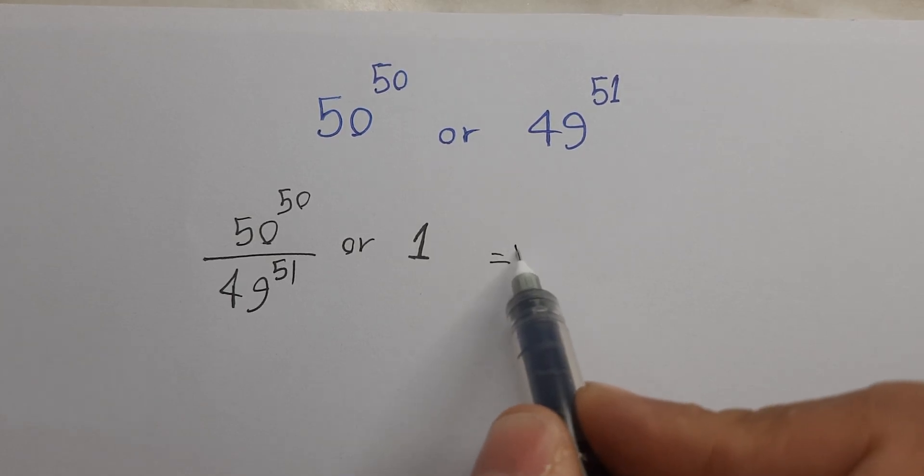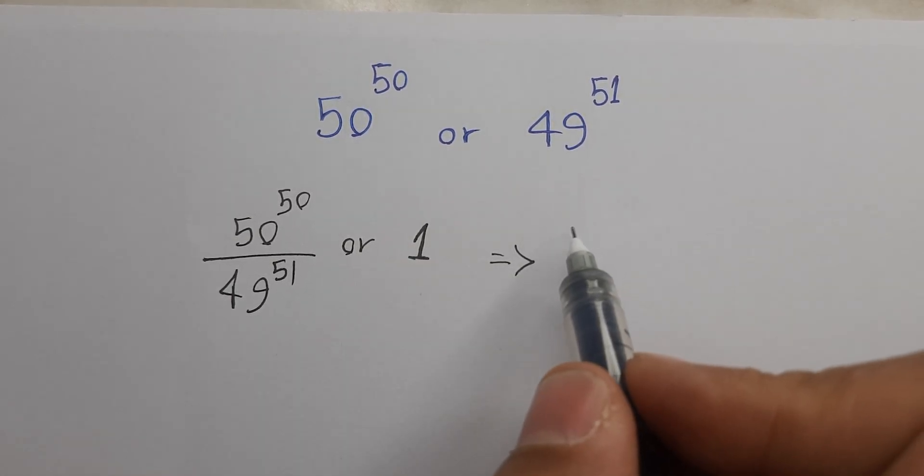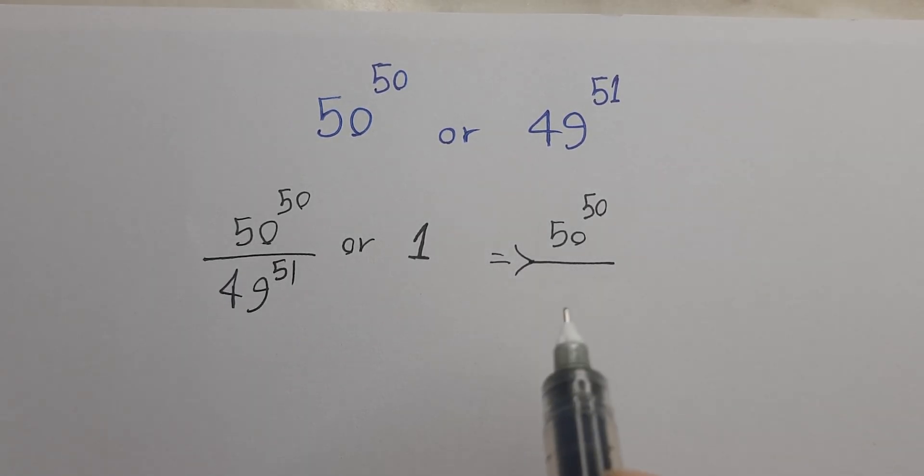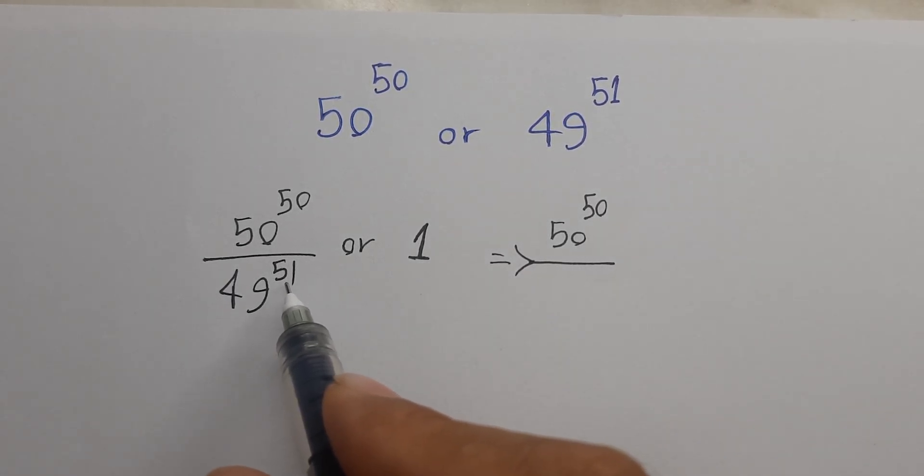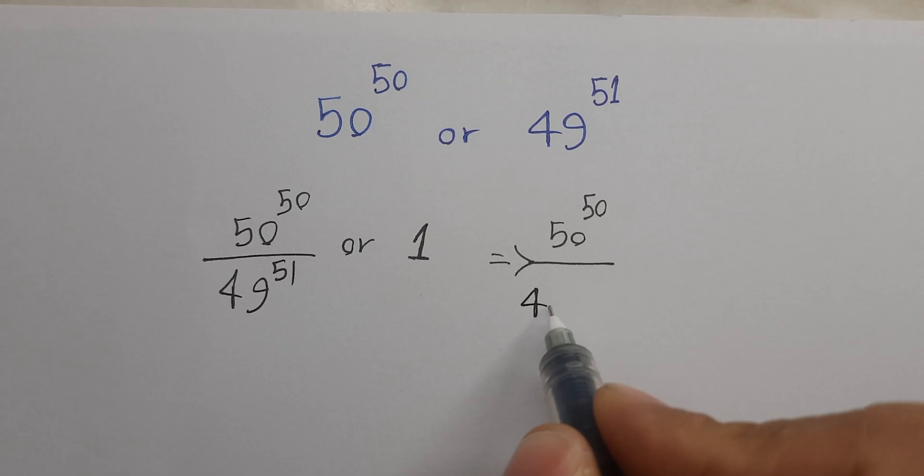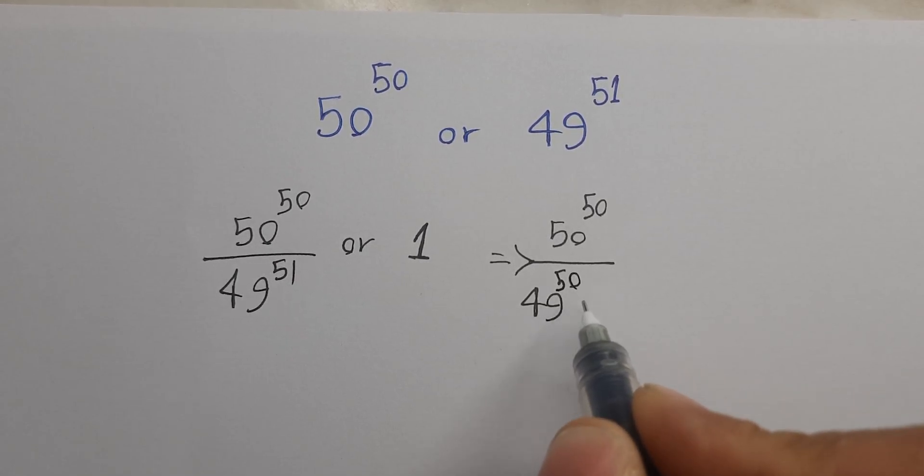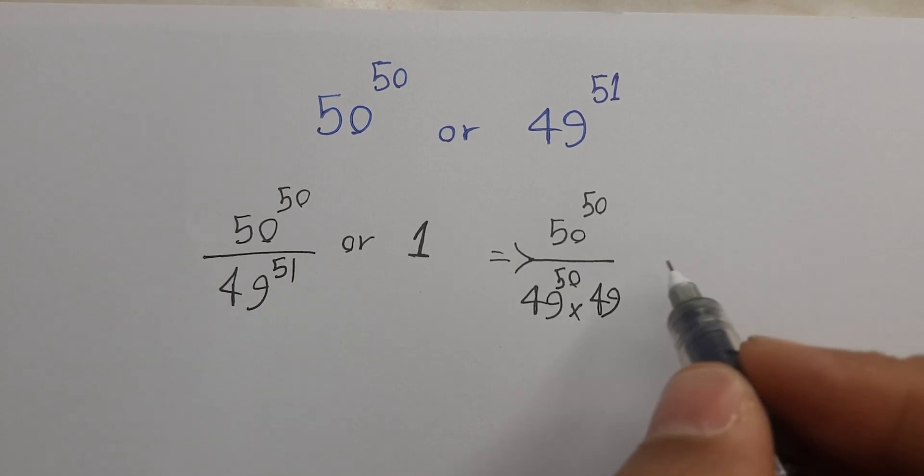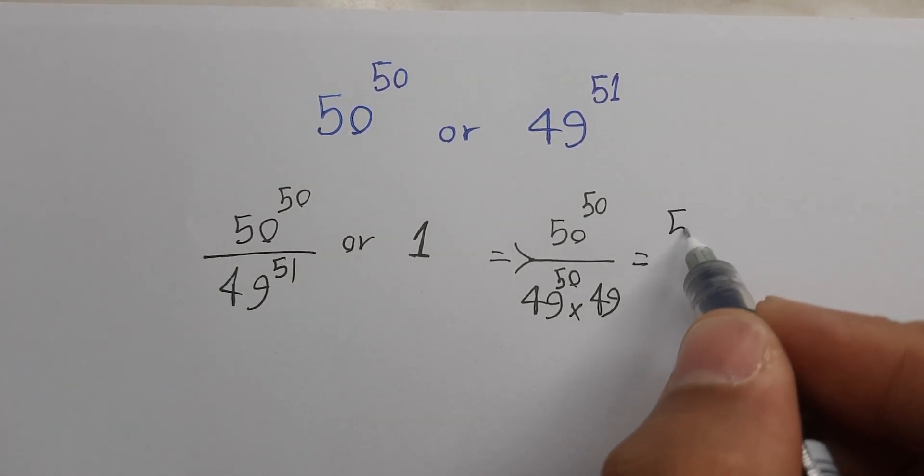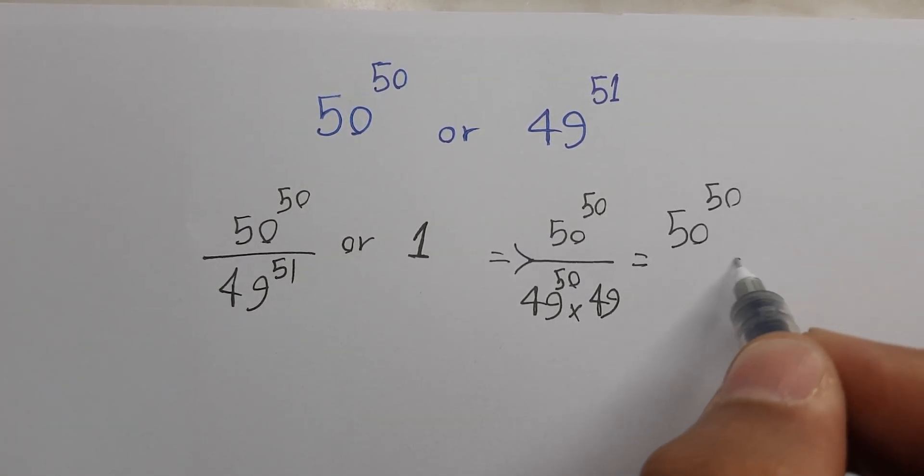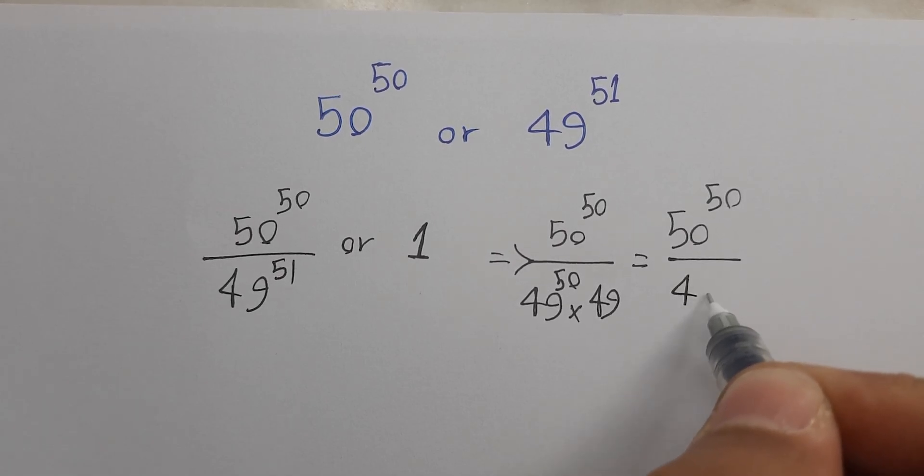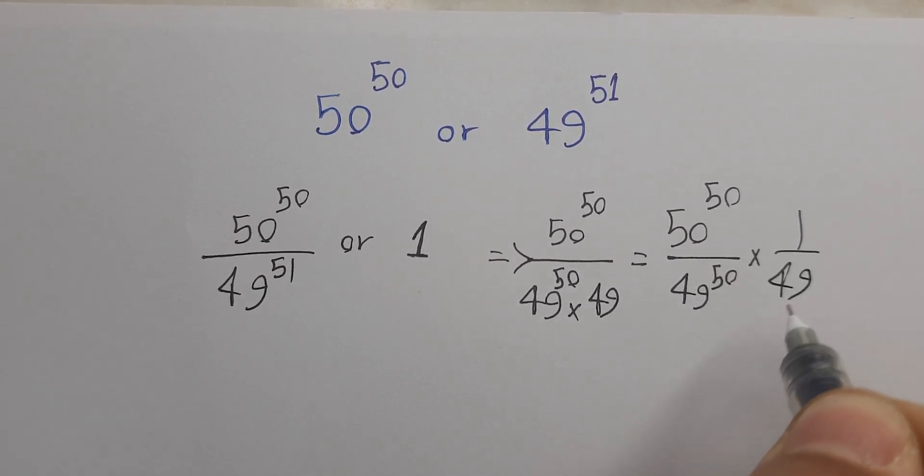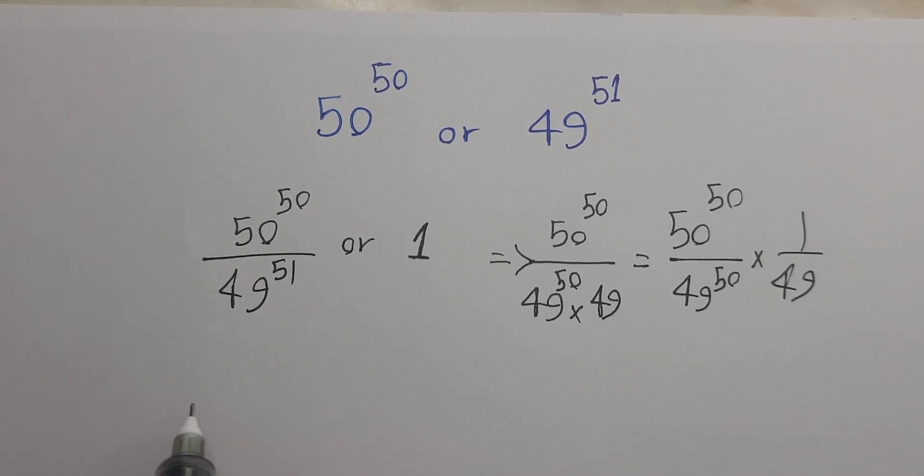You can write that 50 power 50 over 49 power 51 equals 49 power 50 times 49. So here, 50 power 50 over 49 power 50 times 1 over 49. So here we have 50 over 49 all power 50 times 1 over 49.